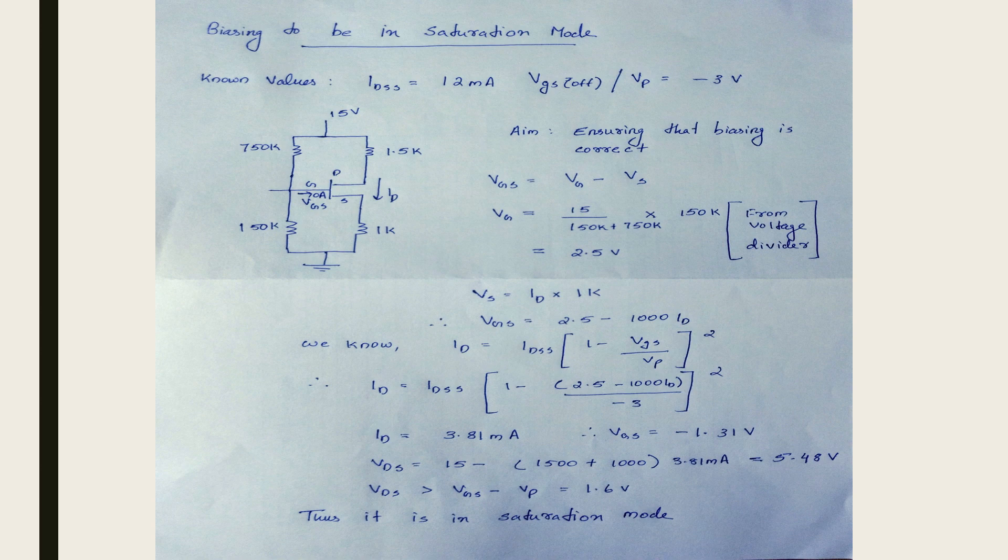VGS is equal to VG minus VS. And VG is equal to 15 upon 150 kilo ohm plus 150 kilo ohm multiplied with 150 kilo ohm. We get this from voltage divider. Thus VG is equal to 2.5 volt. VS is equal to ID into 1 kilo ohm. Therefore VGS is equal to 2.5 minus 1000 ID. We know ID is equal to IDSS times 1 minus VGS by VP the whole square. Substituting the values we get ID is equal to 3.81 milliampere. Therefore VGS is equal to minus 1.31 volt. VDS is therefore 5.48 volt.